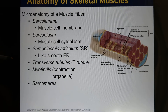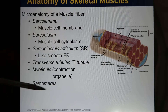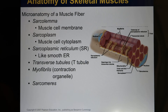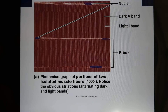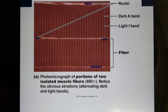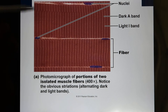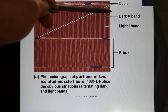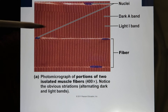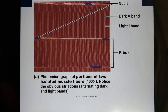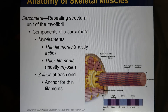The contracting unit is called the myofibril, and the small repetitive structure is called the sarcomere. This slide shows you the muscle fiber with those light and dark patterns — the A-band is the dark one and the I-band is the light one.